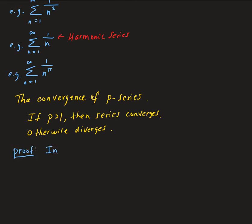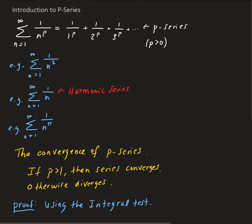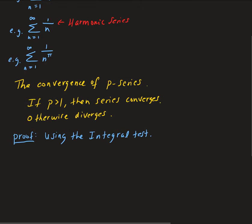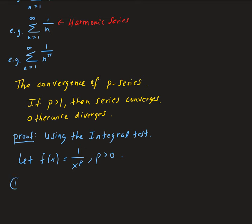We're going to use the integral test, which has three conditions. The first condition is that the function must be positive. Our function in this case is f(x) = 1 over x to the p, where p is strictly bigger than 0. The function is positive on the interval from 1 to infinity because all x values in that range give positive function values.